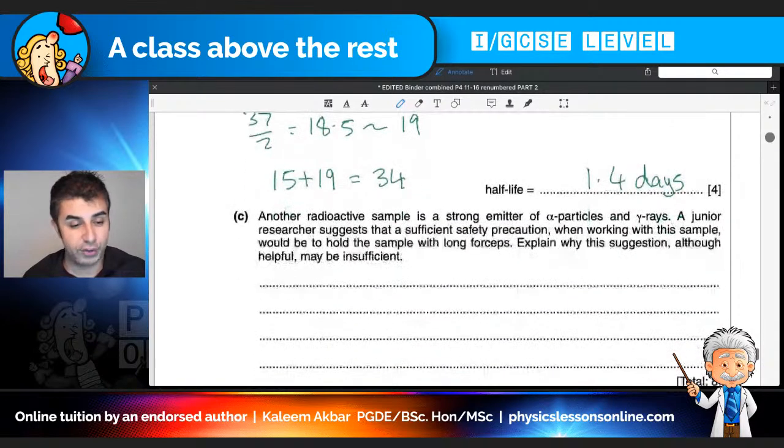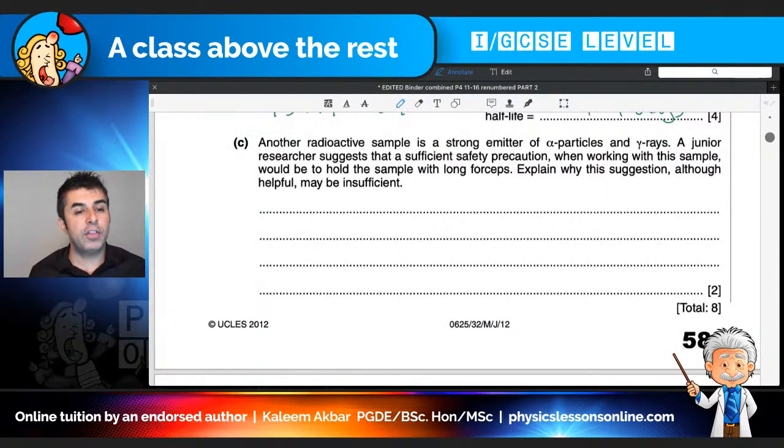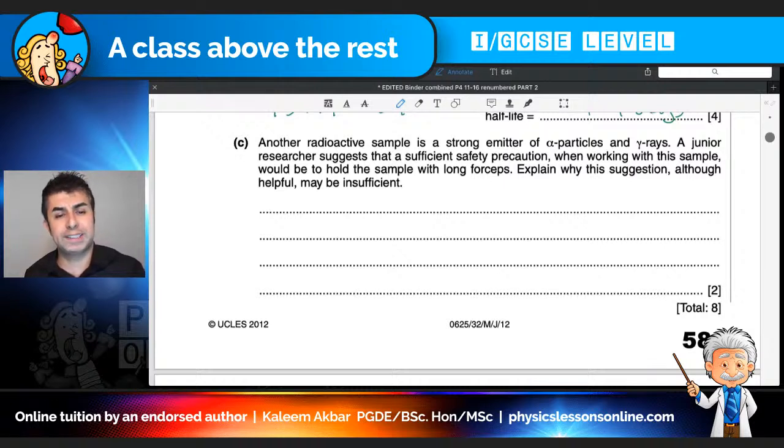Okay, moving on to the last part. Another radioactive sample is a strong emitter of alpha particles and gamma rays. A junior researcher suggests that a sufficient safety precaution when working with this sample would be to hold the sample with long forceps. Think of them like long scissors or long tweezers. Okay, explain why this suggestion, although helpful, may be insufficient. Now, when I say scissors, by the way, I don't mean it will cut it. I just mean the length. So what they're asking for, they're saying that this is a helpful thing to do, but it might not be enough. Why?